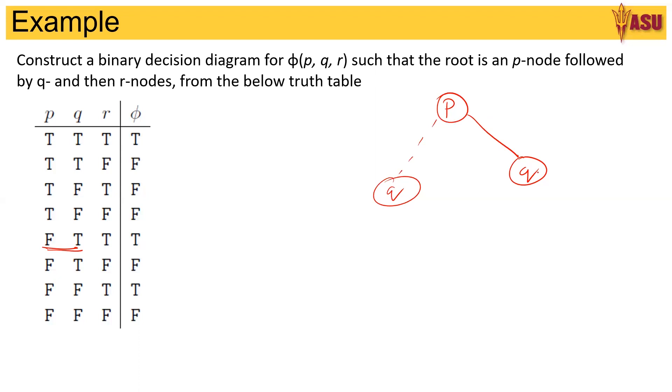So this is what we see for q, then from q to r. So on true we see a true and also from false we see a true. So from here we get r, r.